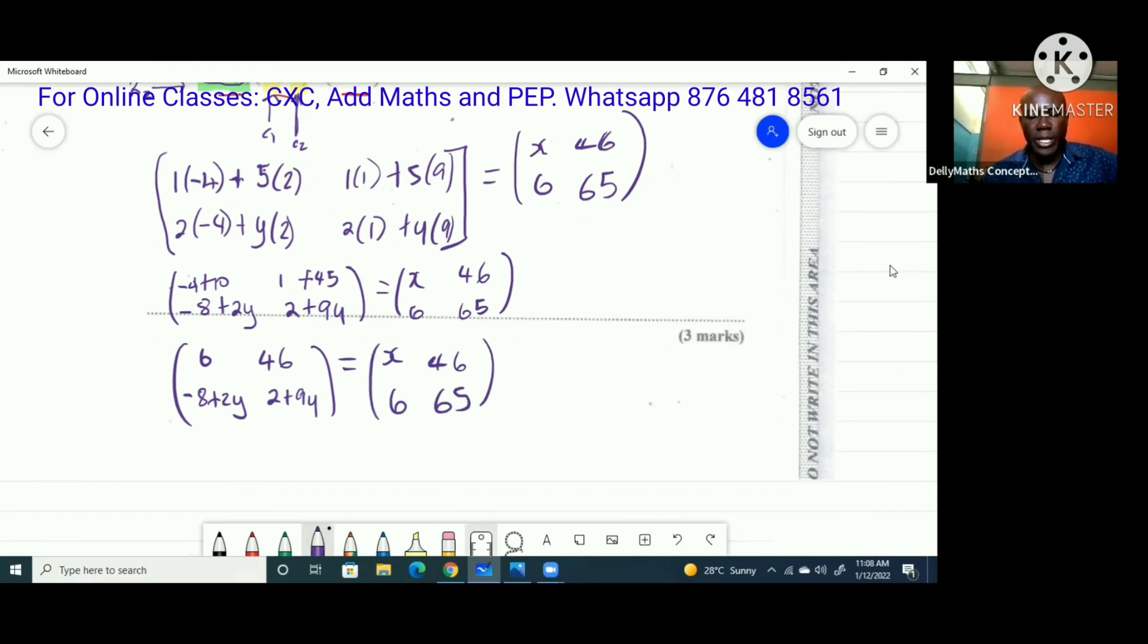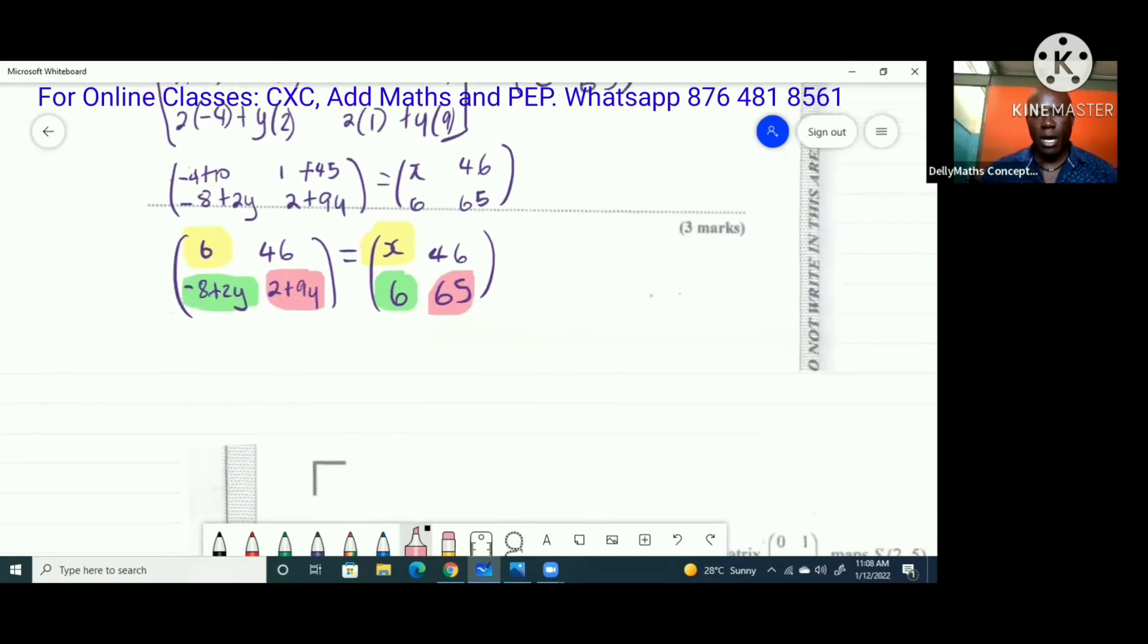What we want to do is equate - when you're dealing with equal matrices, corresponding elements are equal. So 6 is equal to x. That's my first solution there. I could solve for y using any one of these. I'll get the same answer. If I want to use negative 8 plus 2y, I could use that with 6 to get the value of y. Or I could use 2 plus 9y with 65 and I'll get the answer for y. I'm going to do all of them just for working sake.